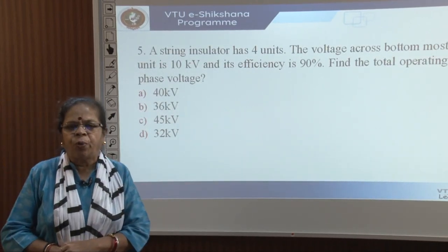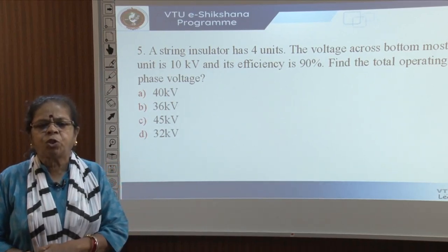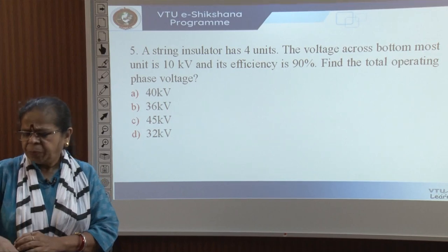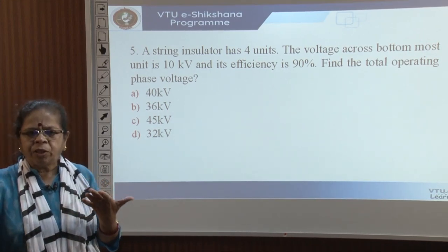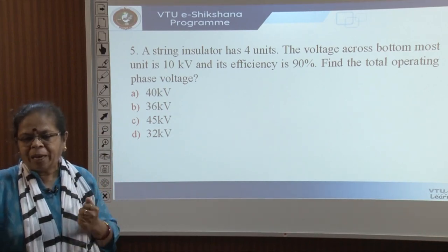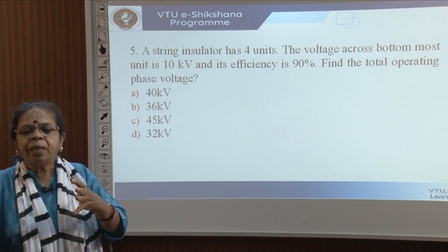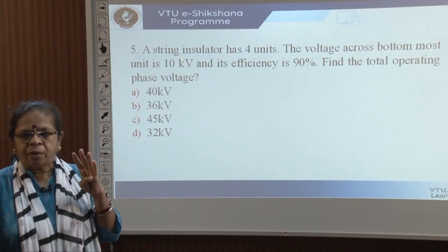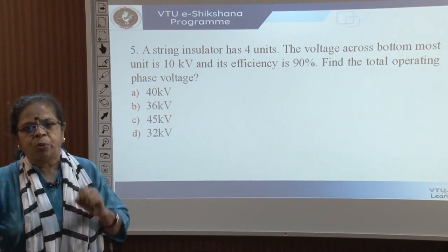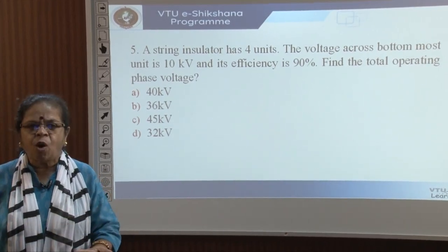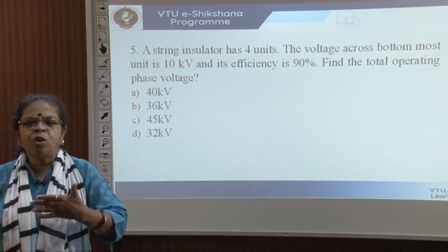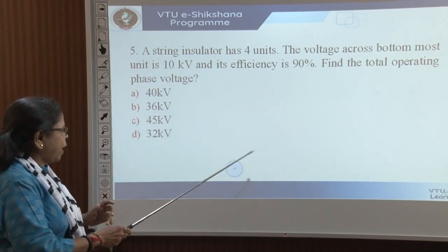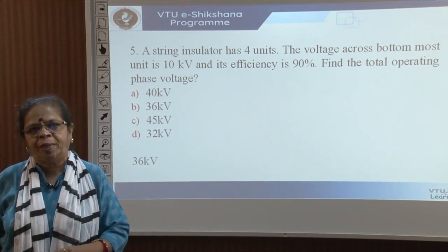Quiz: A string insulator has 4 units. Voltage across the bottom-most unit is 10 kV and string efficiency is 90%. Find total operating voltage. Efficiency = V / (N × V_last), so 0.9 = V / (4 × 10) = V/40. Therefore V = 0.9 × 40 = 36 kV.